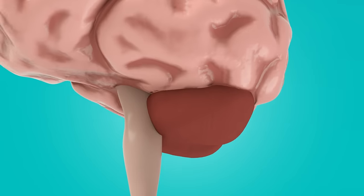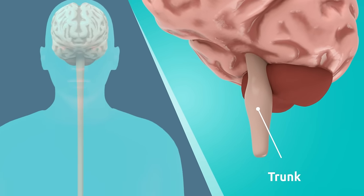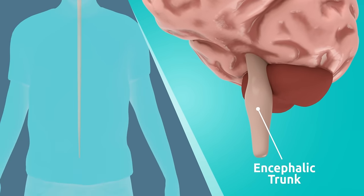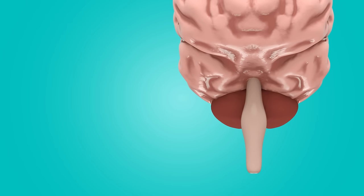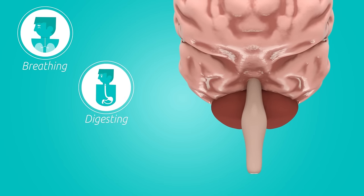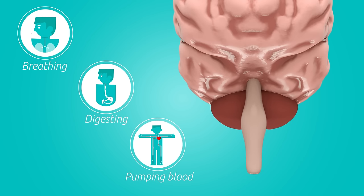The encephalic trunk connects the brain to the spinal cord, which goes from our neck all the way down to the lowest part of our back. The encephalic trunk is also in charge of the vital functions like breathing, for example, or digesting and pumping blood to all parts of our body.